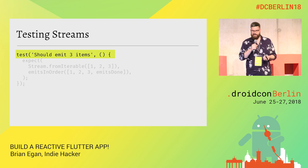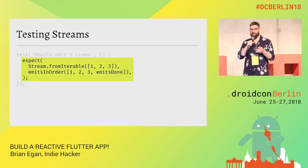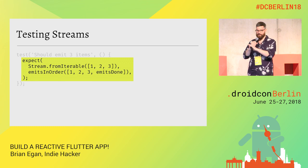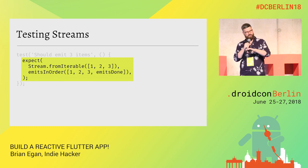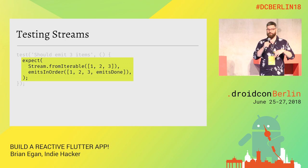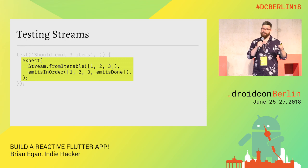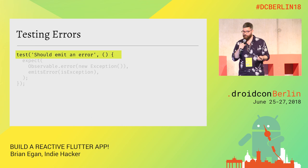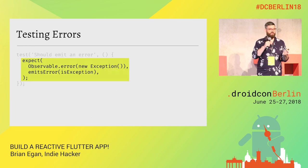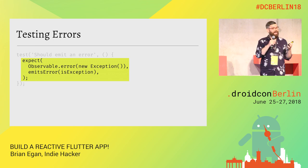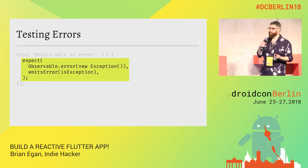BLoCs are really testable. Because streams are baked into Dart, you get testing library support too. You can say: I've got this stream and I expect it to emit these values in order. If you're worried about your UI emitting states in the wrong sequence, you can easily test whether your stream is doing the right thing in the right order. You can also test errors — does this stream emit an error of a certain type? You can provide custom matchers to verify you're getting the right thing.